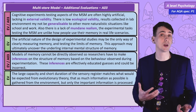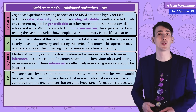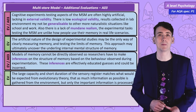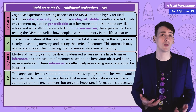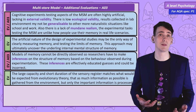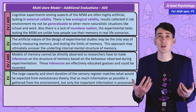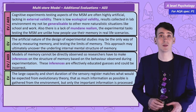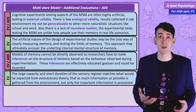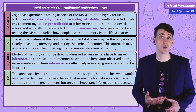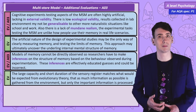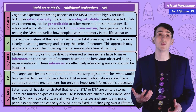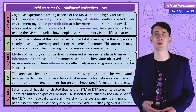An interesting point about the large capacity and short duration of the sensory register is that it's supported by evolutionary theory. In the wild, we need quick reactions for survival — taking in as much information as possible, but only keeping and processing the important information. Holding on to and processing too much information would slow down reaction speed, making you someone's lunch.